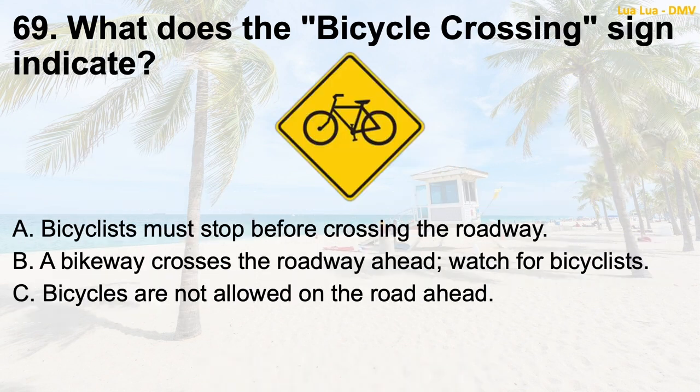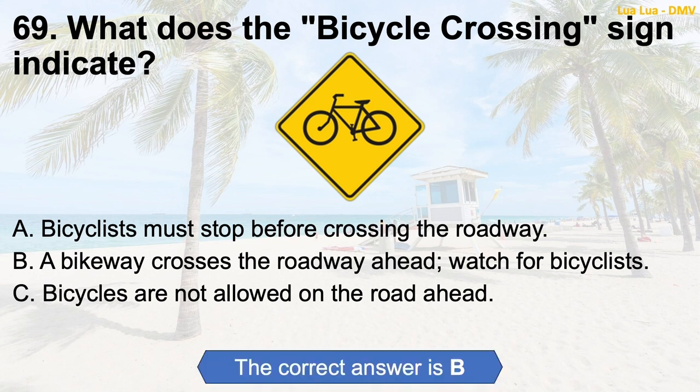Question 69: What does the Bicycle Crossing sign indicate? A. Bicyclists must stop before crossing the roadway. B. A bikeway crosses the roadway ahead — watch for bicyclists. C. Bicycles are not allowed on the road ahead. The correct answer is B: A bikeway crosses the roadway ahead — watch for bicyclists.